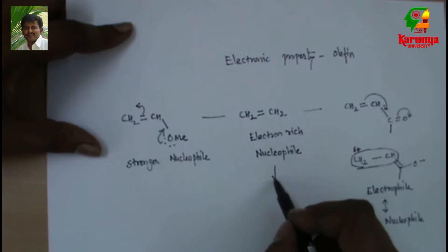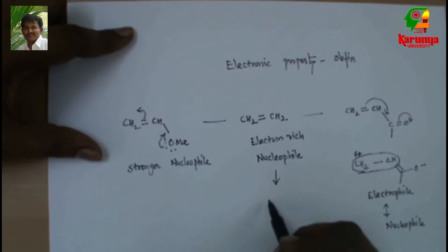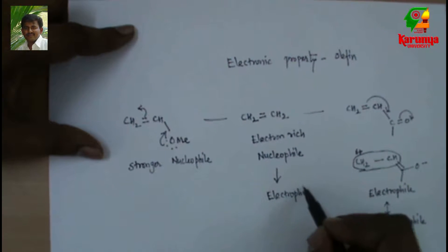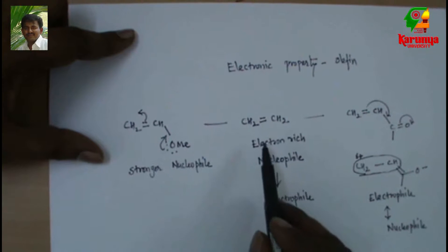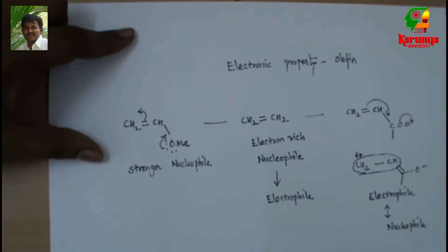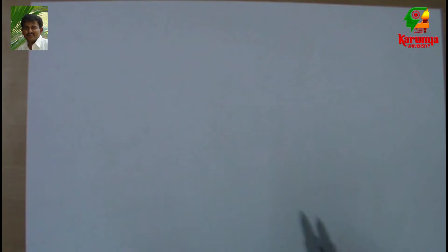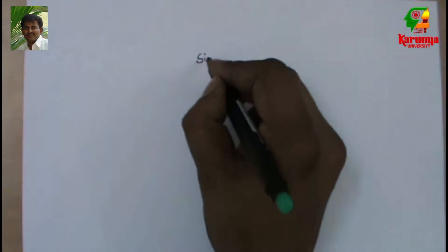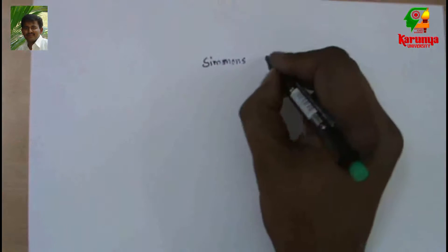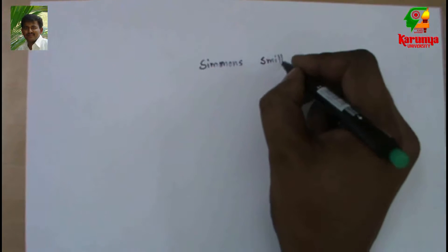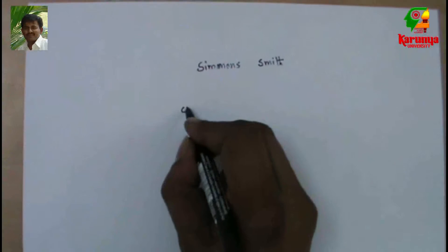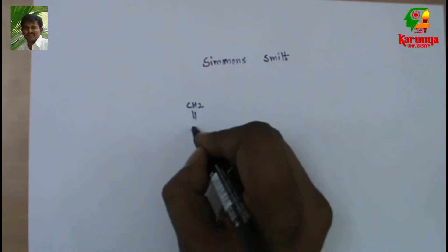This electrophile can react with another nucleophile and not with an electrophile. This nucleophile can react with an electrophile — it cannot react with another nucleophile.